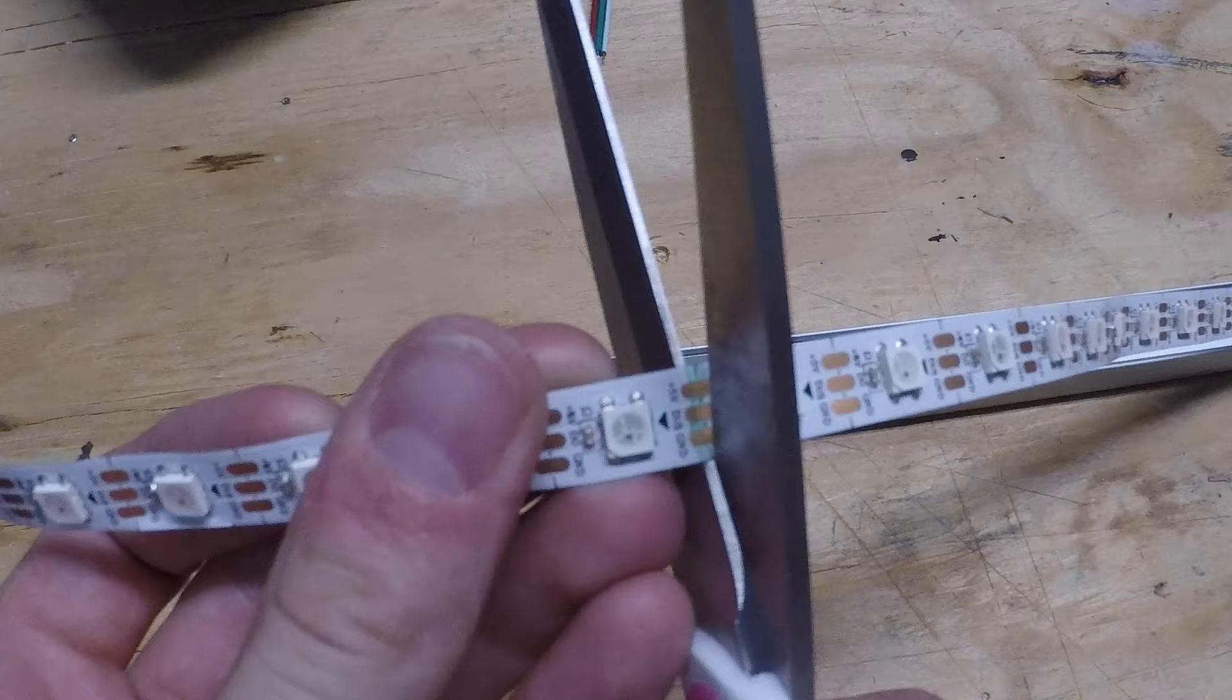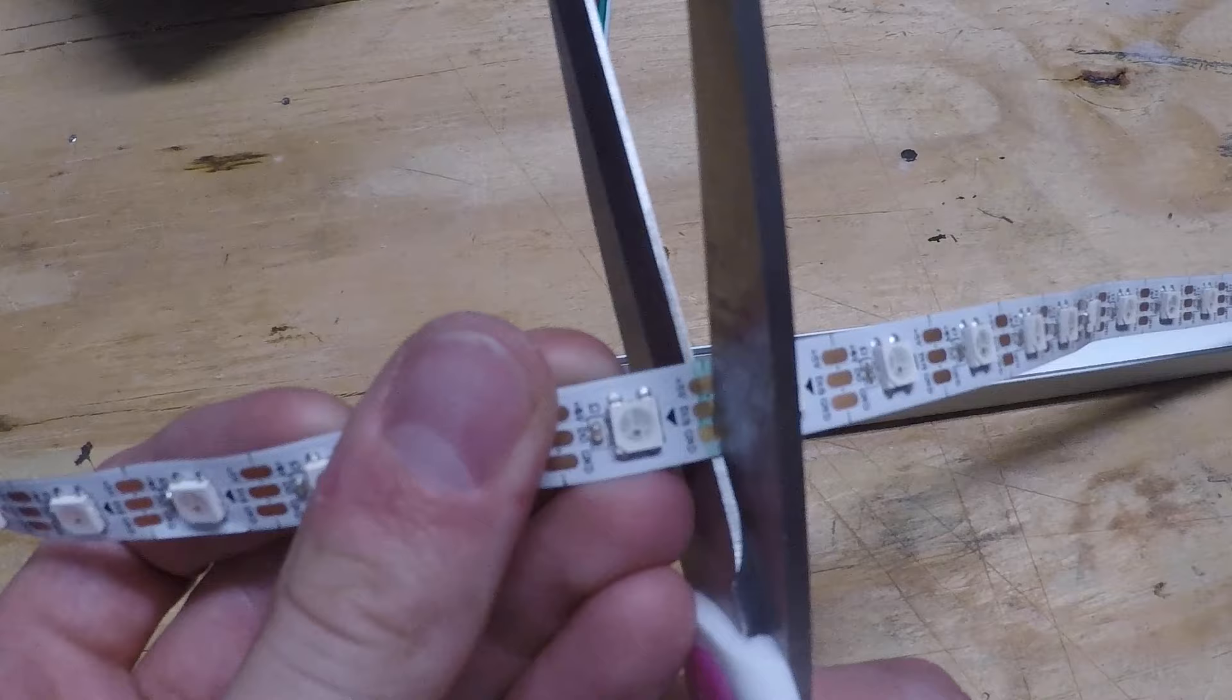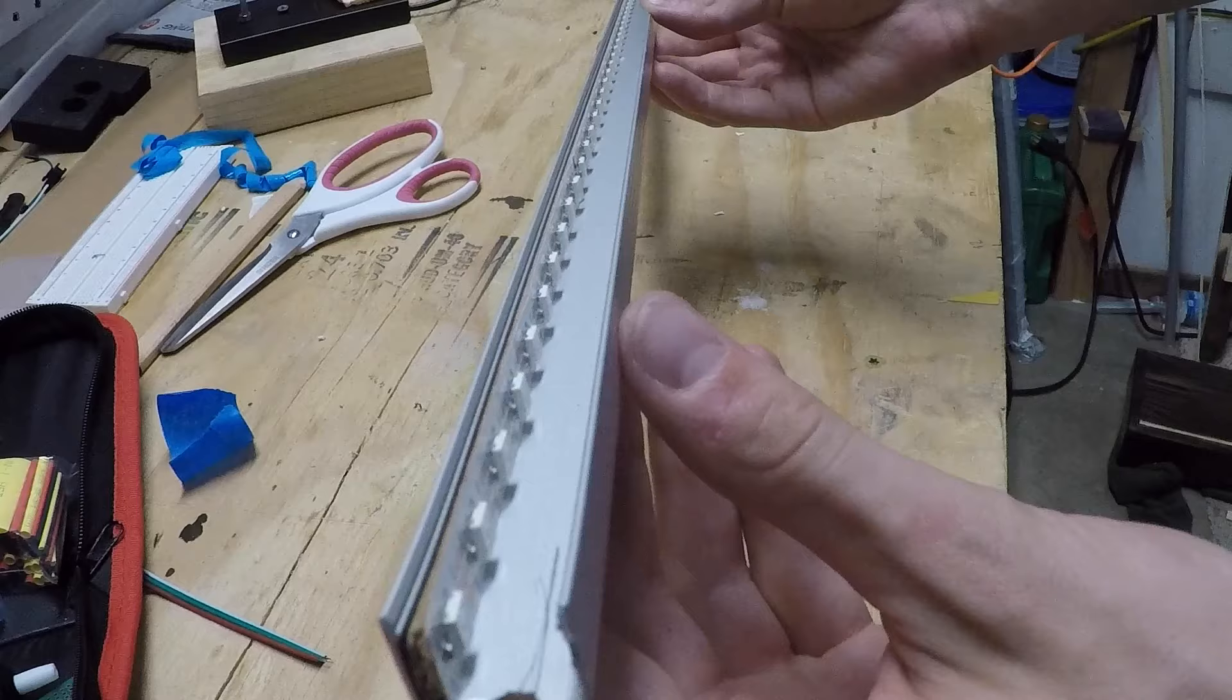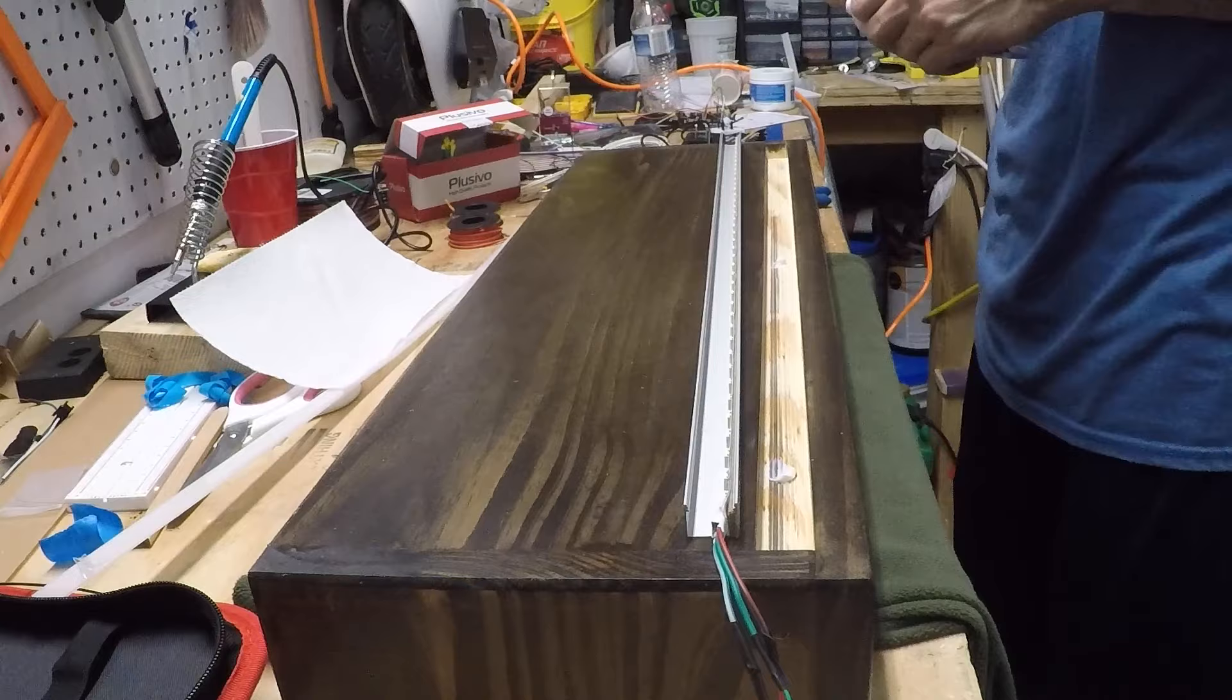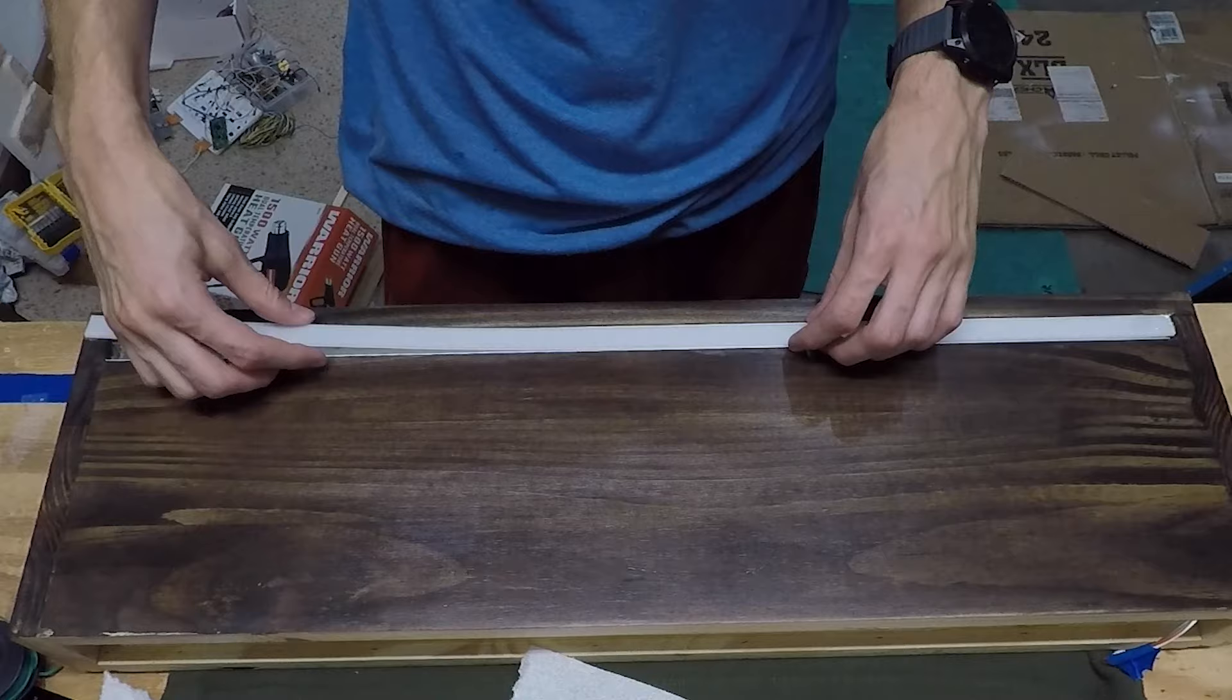And then cut the strip at the right length, and then I will remove the adhesive backing and put it on top of that cardboard spacer. So now you can see we have the LEDs in the channel facing to the side, which should help diffuse it better. So next I'll glue that aluminum channel into the slot in the floating shelf and then snap on the plastic diffuser that came with it.